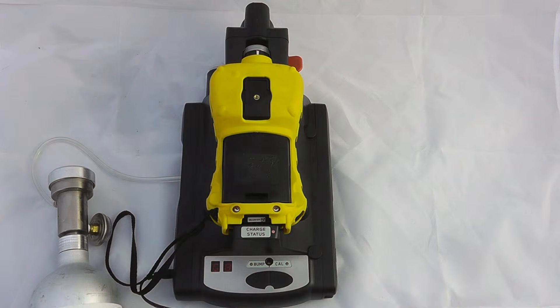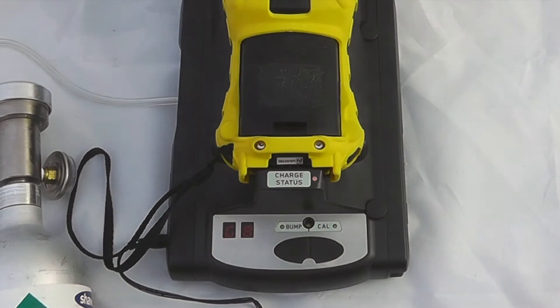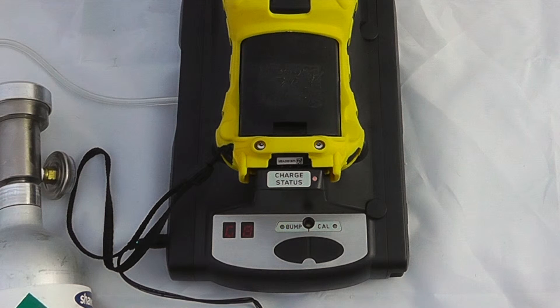If the light goes green at the end of it we know it's been a successful bump test and if it goes to red it will either automatically go into a calibration cycle or you'll have to manually calibrate the device. So we can see that that bump test has been successful.